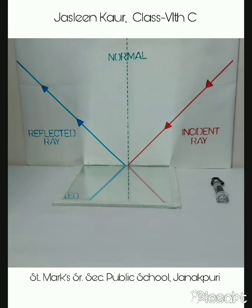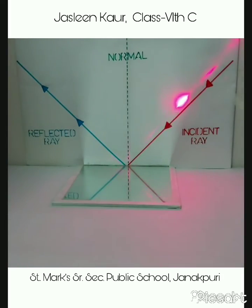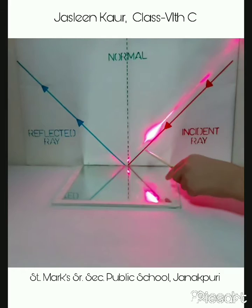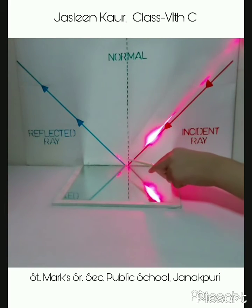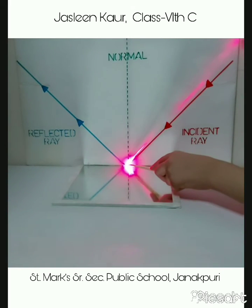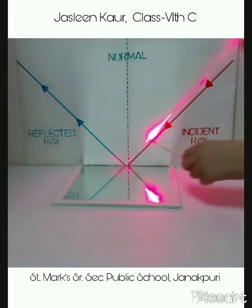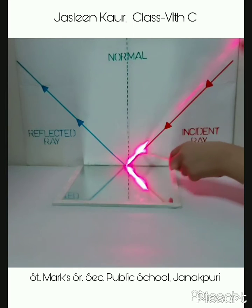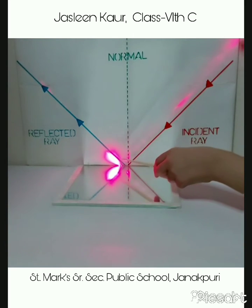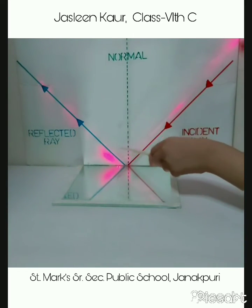Let us demonstrate. The point where the light hits the surface is known as the point of incidence. As you all can see clearly, this is the incident ray and this is the reflected ray.